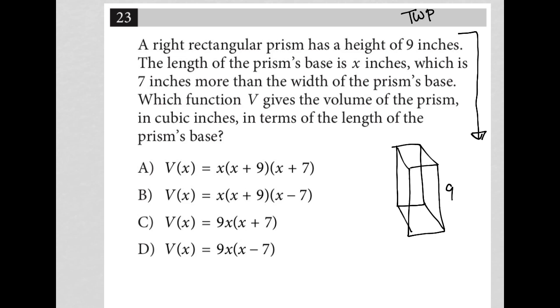So then the next sentence says the length of the prism's base is x. Okay, so I'd put an x here, which is seven inches more than the width of the prism's base. Okay, so x is seven inches more. So I am going to say that this then is x minus seven, right? Seven inches more than x minus seven would just be x. So I've labeled the length, the width, and the height.